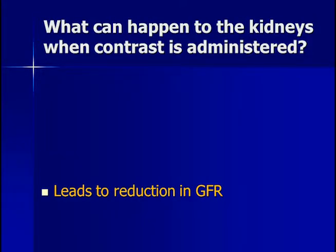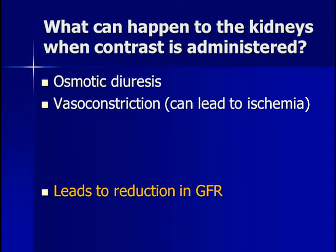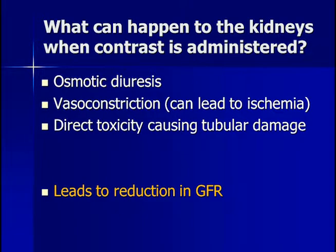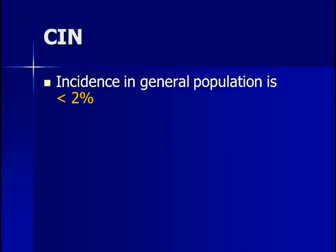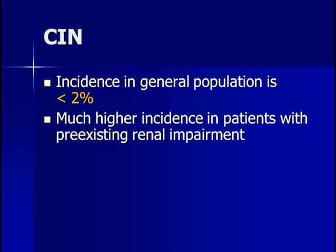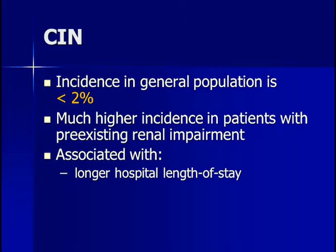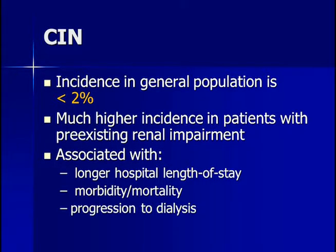What can happen to the kidneys when contrast is administered? Several factors can occur leading to kidney damage, though this does not happen to everyone. Osmotic diuresis can occur, as well as vasoconstriction leading to ischemia, direct toxicity of iodine causing tubular damage, and oxygen-free radical formation, all leading to a further reduction in GFR. The incidence of CIN is less than 2% in the general population, but much higher in patients with pre-existing renal failure. CIN is associated with longer hospital stays, increased morbidity and mortality, and increased progression to dialysis.